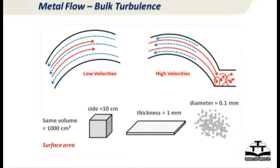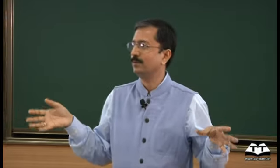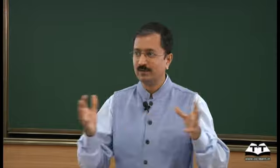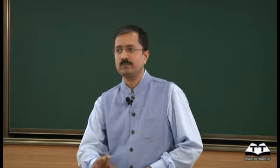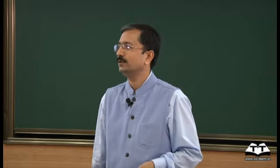Simple calculation: supposing you have a cube of 10 centimeters — volume is 1000 cm³. If you reduce it to a plate of 1 millimeter thickness, the surface area increases by about 100 times. If you break it up into droplets of 0.1 millimeter size, the surface area increases by 1000 times. Turbulence breaks up the surface into multiple droplets. Each surface gets oxidized — you do not want that. That is the basic harmful effect of turbulence: increased surface area, air gets mixed in, and you have a lot of oxidation.